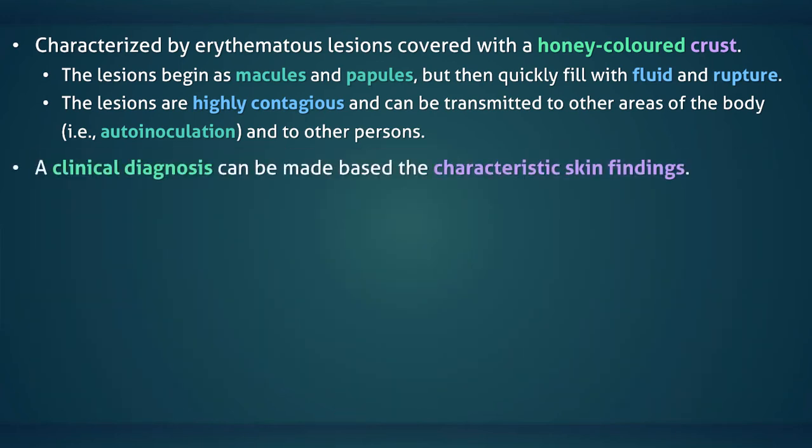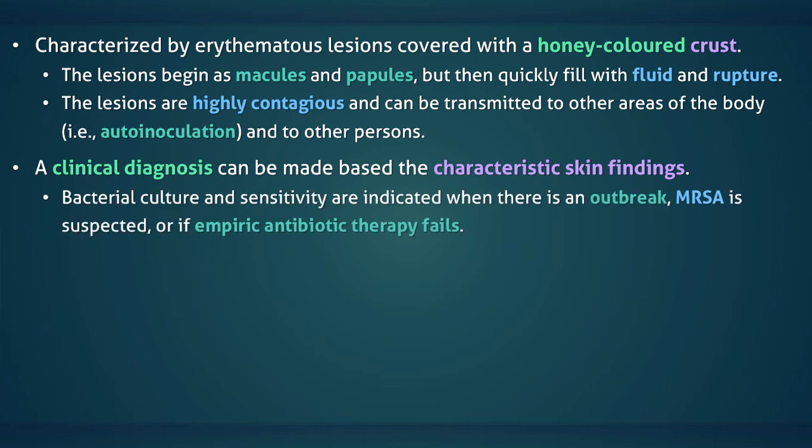A clinical diagnosis can be made based on characteristic skin findings. Bacterial culture and sensitivity are indicated when there is an outbreak, MRSA is suspected, or if the patient fails to respond to empiric therapy. For those with recalcitrant impetigo, a nasal culture should be performed to check for carriage of group A streptococcus and staphylococcus aureus.